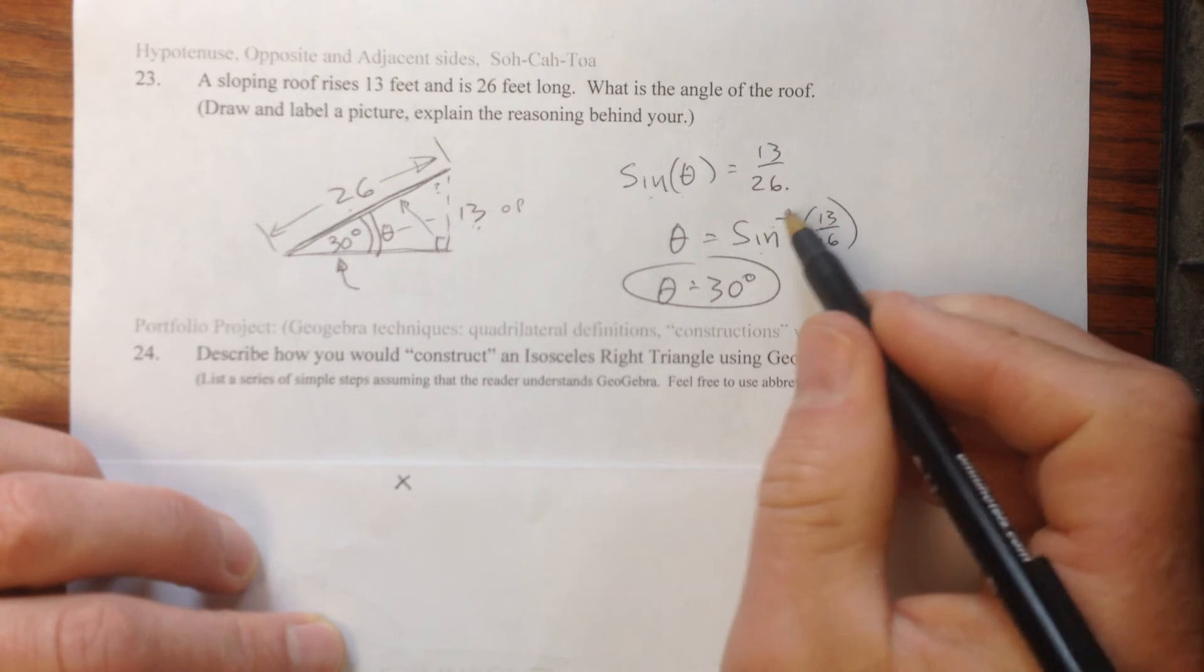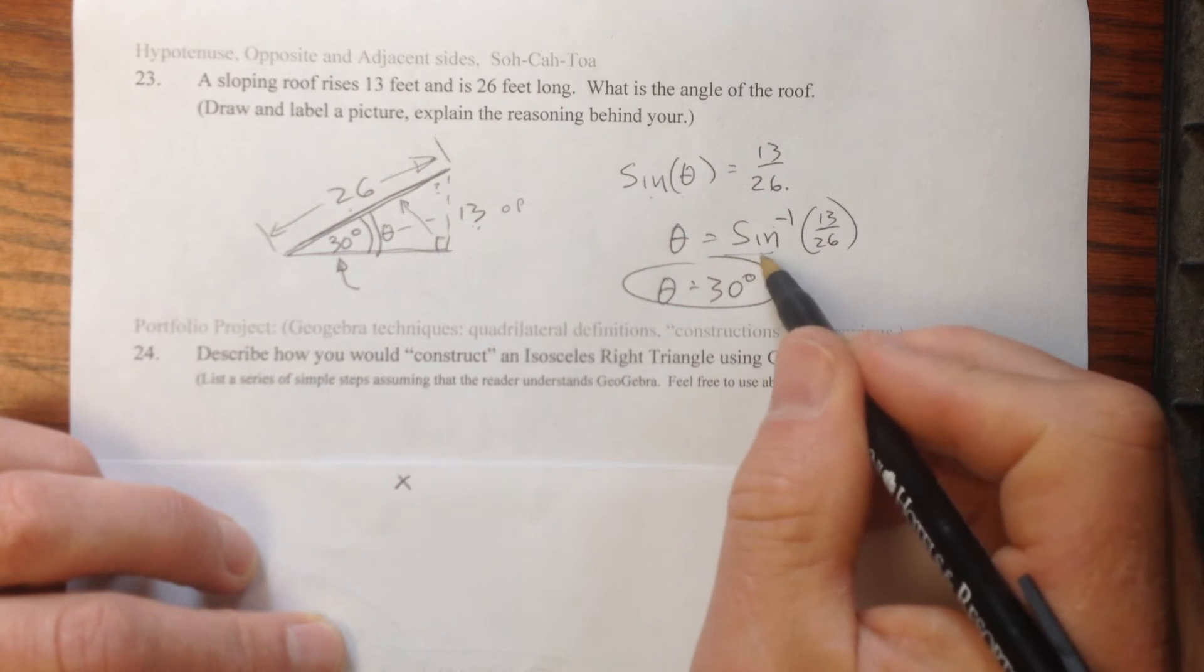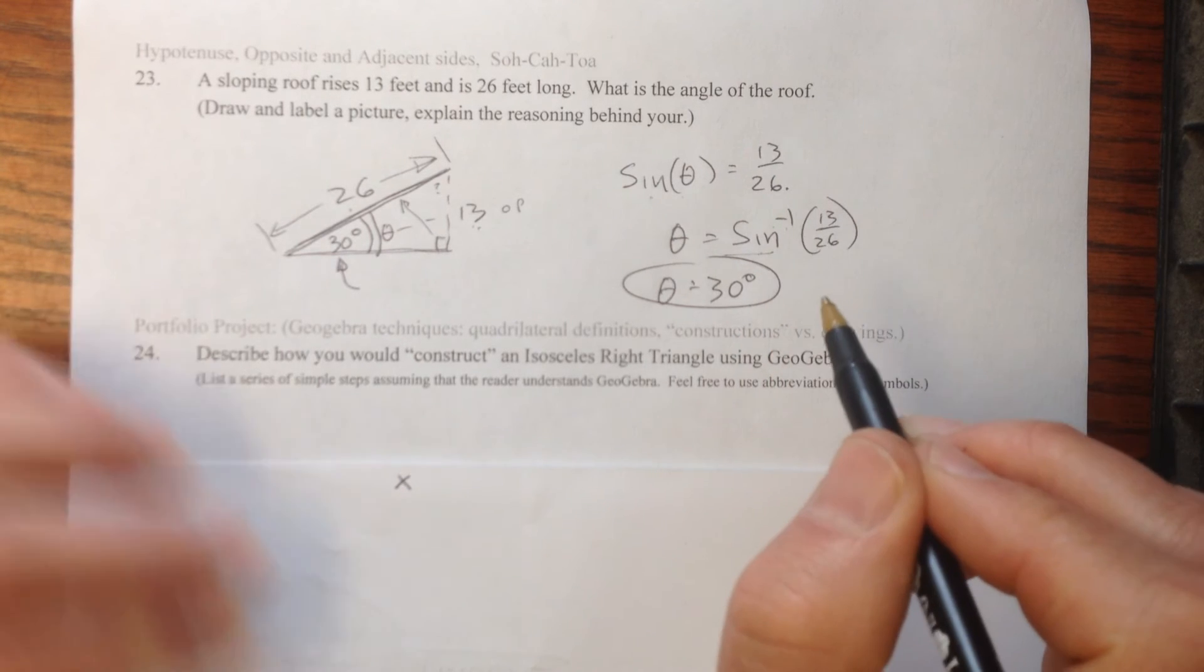Finding an angle means you're going to do the sine ratio, the sokatoa, to the minus one.